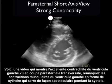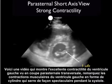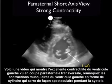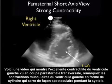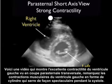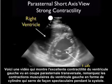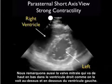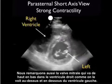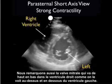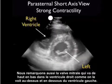Here's a video clip showing excellent contractility of the left ventricle taken from the parasternal short axis plane. Note the muscular contractions of the left ventricle as the cylinder squeezes in dramatically during systole. We also note the mitral valve flipping up and down within the left ventricle, and the right ventricle seen up and above the left ventricle.